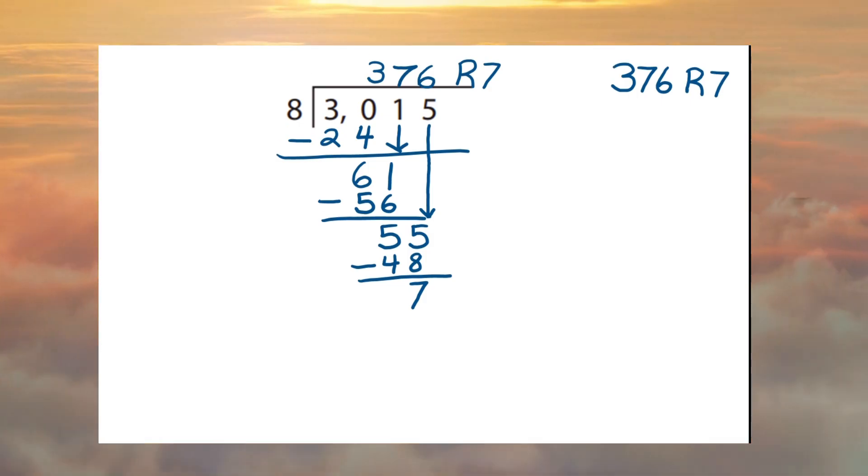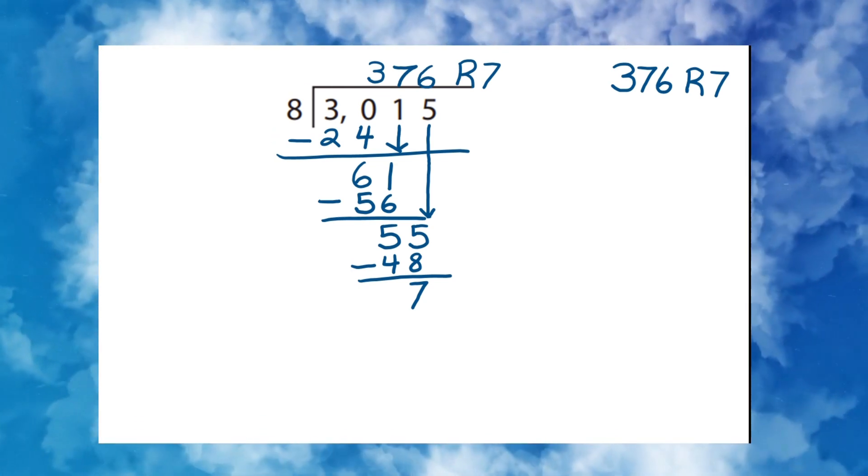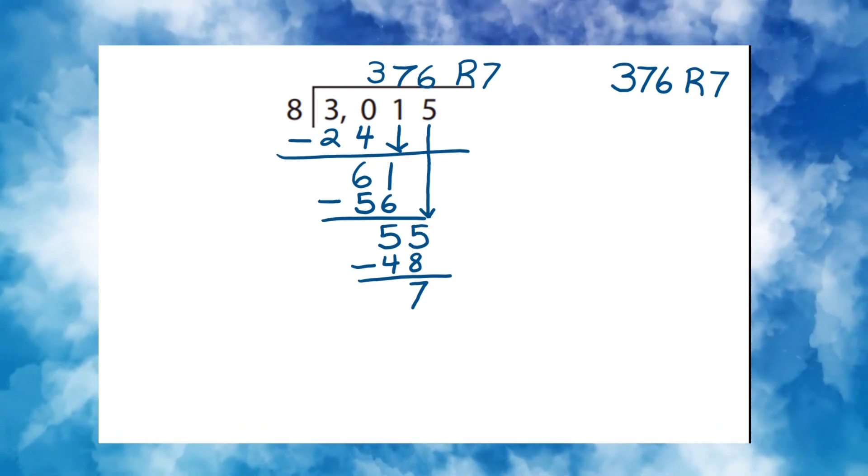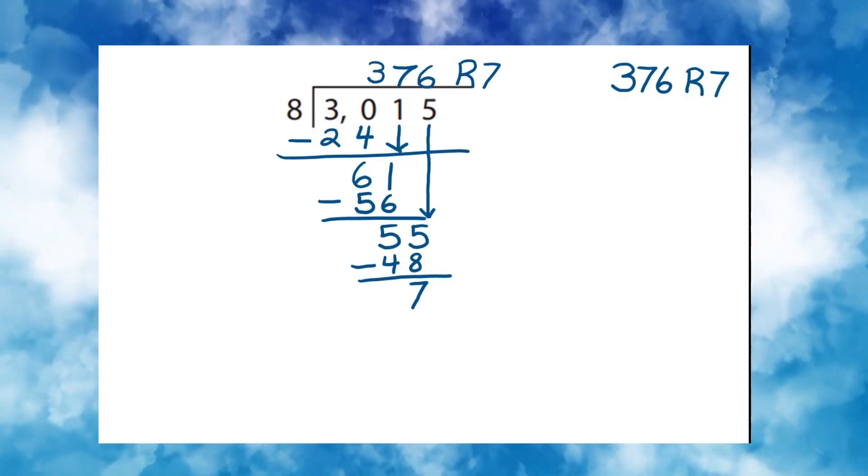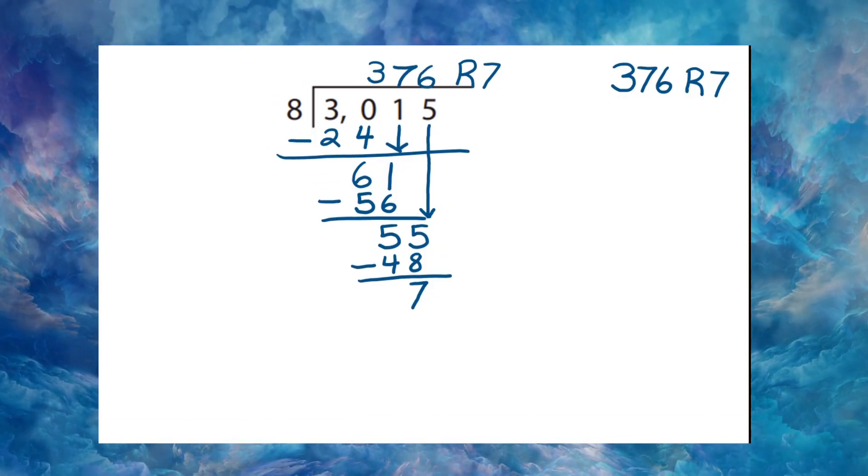But there are other ways to represent this quotient. Oh, yes. There are other ways that we can determine the answer of three thousand fifteen divided by eight.